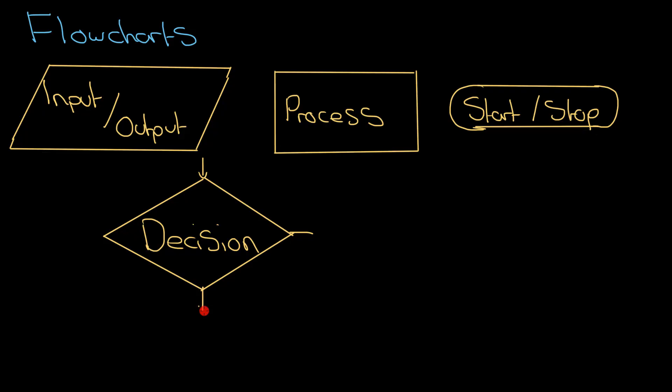The last one we need to be aware of is this one here, which you don't see too often, but it is used for subroutines, which lets you break up a flowchart into several smaller flowcharts. We'll show you how that works. It's called subprocesses.